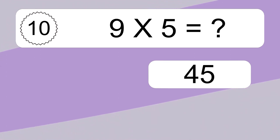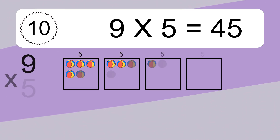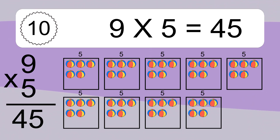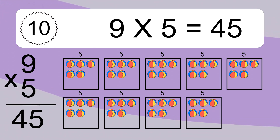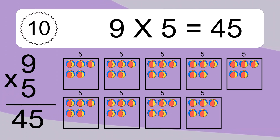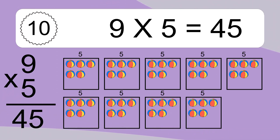9 times 5 equals 45. We have 9 boxes, and each box has 5 colorful balls inside. If you count all the balls in all the boxes together, you will have 9 times 5 balls. This equals 45 balls.